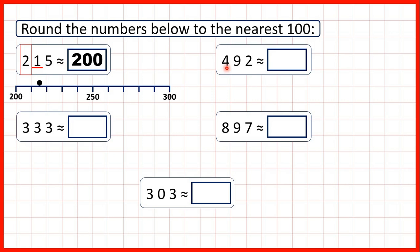Now let's try 492. We're rounding to the nearest hundred, so we circle our hundreds digit and underline the digit to the right. If we have 5 or more, we're rounding up, and we have a 9. So when we round up, the digit that we've circled — the digit we're rounding to — increases by 1, which means this 4 becomes a 5 to give us 500, because digits to the right of what we've circled turn into zeros.